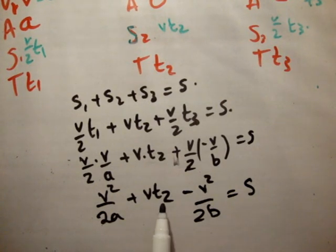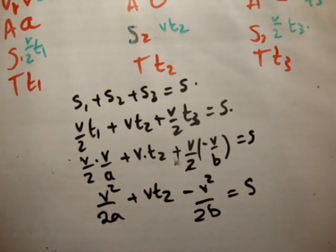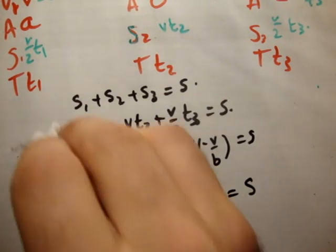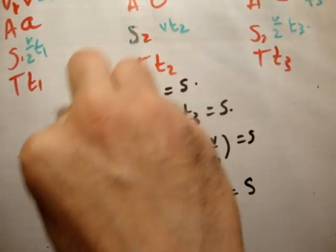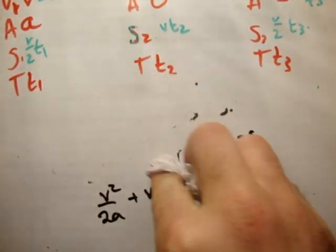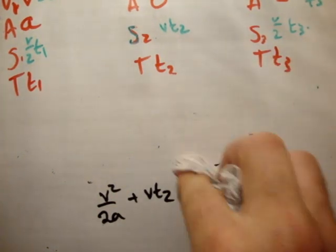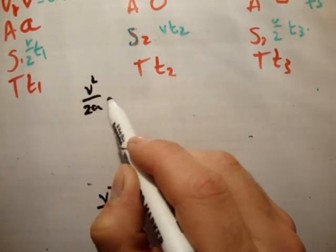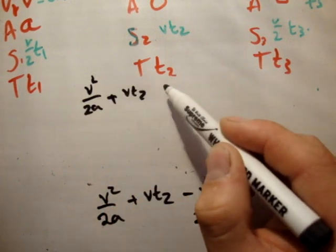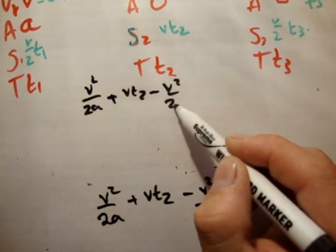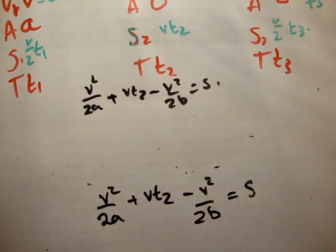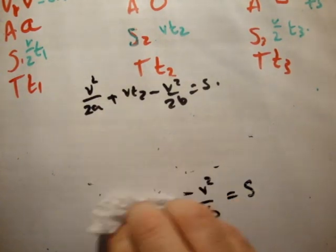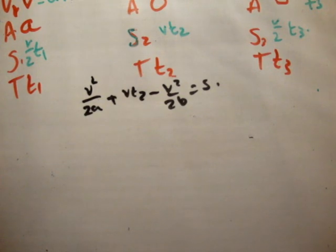And, look, we have t2 and all the other variables, but no mention of t1 or t3. So, we're doing well. Now, because I don't have much room, I'm just going to rub out what I wrote up here and continue on. So, we'll just rewrite that. We have v squared over 2a, plus v times t2, minus v squared over 2b, is equal to s. So, what we want to do is isolate t2 and get an expression for that.